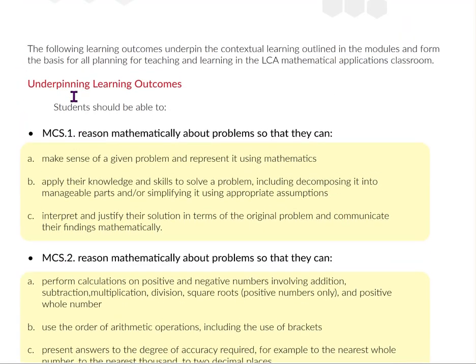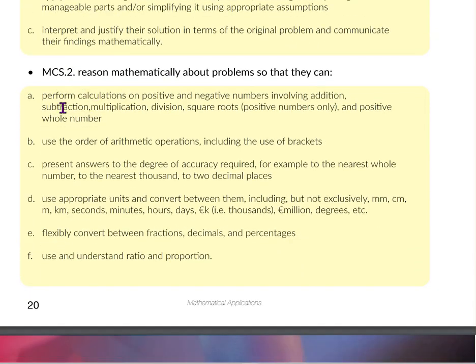Moving on to the second part of the Concepts and Skills list: perform calculations on positive and negative numbers including addition, subtraction, multiplication, division, square roots, and positive whole numbers. Use the order of arithmetic operations including the use of brackets. Oftentimes we can do them in the exam by simply keying the exact expression into the calculator. Present answers to the degree of accuracy required - this is about rounding, for example to the nearest whole number or nearest thousand.